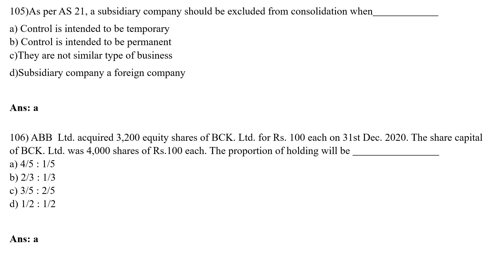If you take 3,200 into 4,000 shares, that means 8 parts of the 4,000 has been taken. So the ratio will be 4 by 1. If you take the ratio of 3,200 and 4,000, your ratio will be 4:1, and if you add 4 plus 1 it will be 5. So the correct answer is Option A — 4/5 ratio into 1/5.